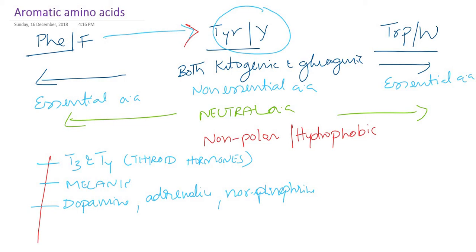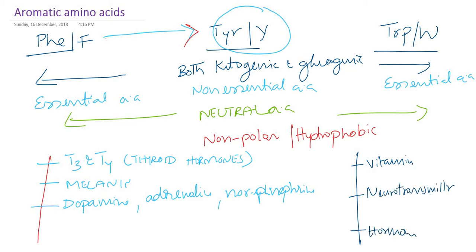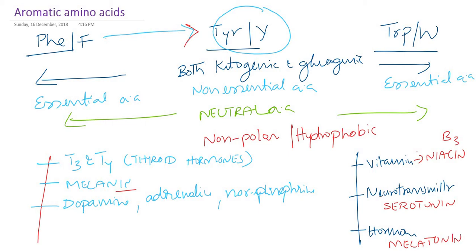From tryptophan, our body can synthesize a vitamin, a neurotransmitter, and a hormone. The vitamin is niacin (B3). The neurotransmitter is serotonin. The hormone is melatonin — not to be confused with melanin, which is a skin pigment. Melatonin is a hormone. In fact, from 60 milligrams of tryptophan, our body can synthesize about 1 milligram of niacin.